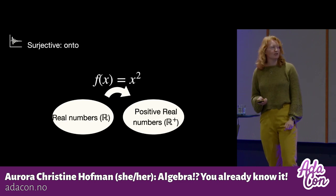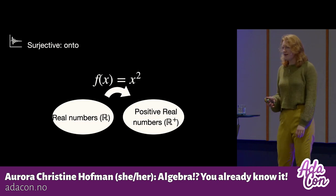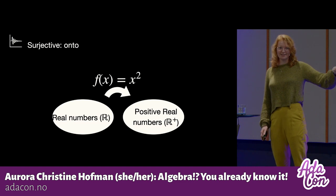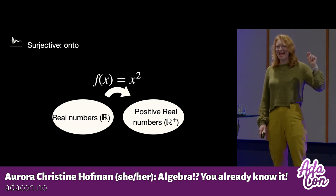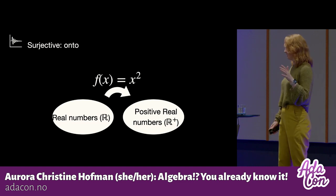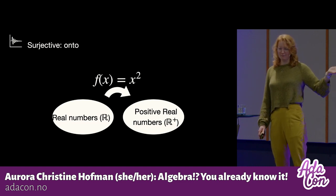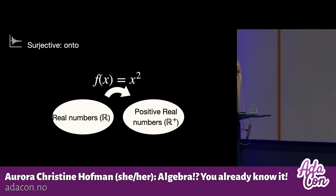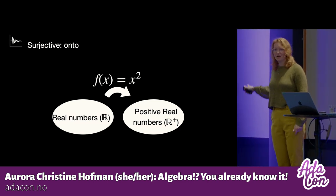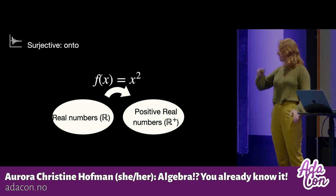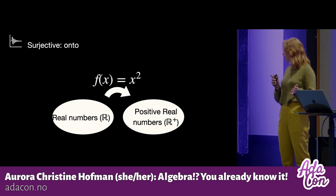And that brings us over to a surjective function, or onto. Now, if we change our spaces, so now our domain is the set of real numbers, and our codomain is the set of positive real numbers. And my function is x squared. Now, in this case, we know that for every positive number, we can actually take the root, and we can come back to our original space. All right?